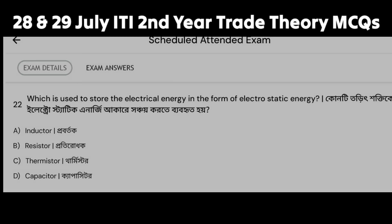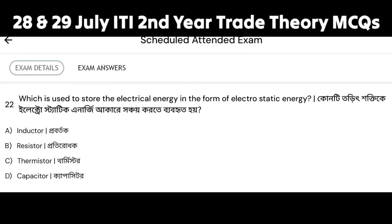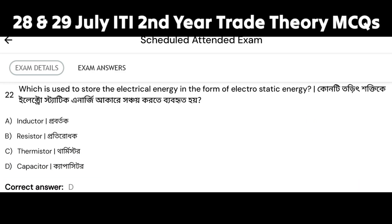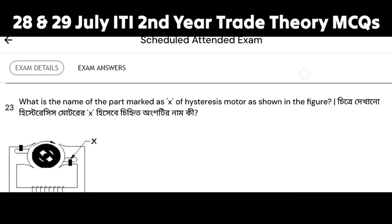Which component is used to store electrical energy in the form of electrostatic energy? The options are: inductor, resistor, thermistor, and capacitor. The capacitor stores electrostatic energy. Option D, capacitor, is the correct answer.